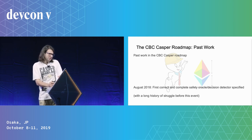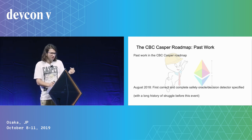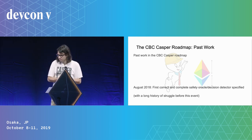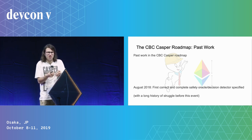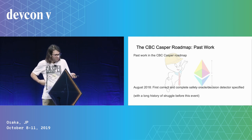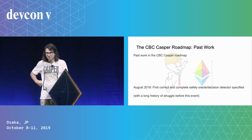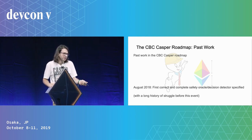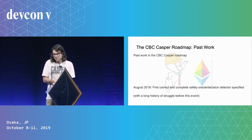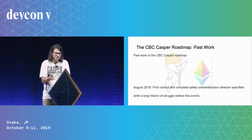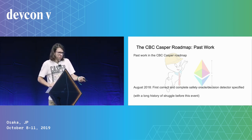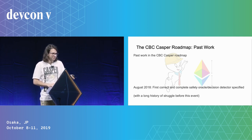In August 2018, we came up with the first correct and complete safety oracle decision detector, at an Ethereum-Stanford math hackathon event. Greg Price came up with this — he attends these math hacking events — and we had a long history of struggling before this specification for detecting safety, especially around cases of equivocations and who sees which equivocations. It turned out to be really challenging reasoning about proofs while validators are equivocating, so a professional math Olympian solved it.